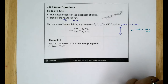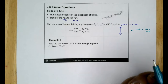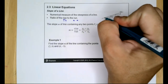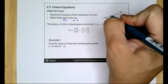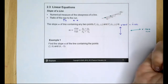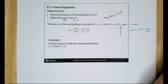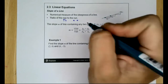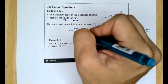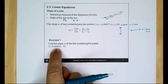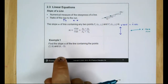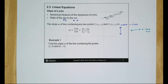The slope is just telling you how to get from one point to the next point on your graphed line. This is called the slope formula, and we're going to use it to find the slope m of the line containing the points (2, 8) and (6, -3).